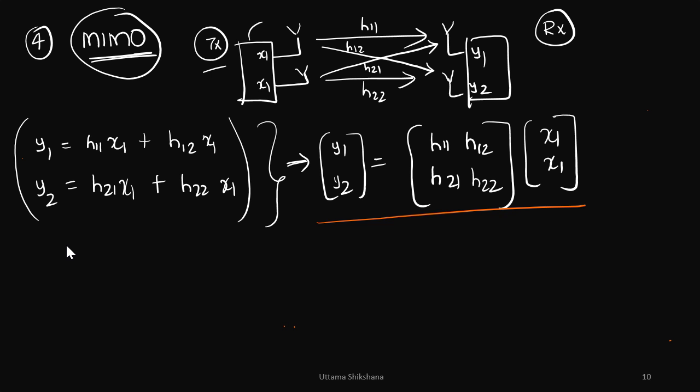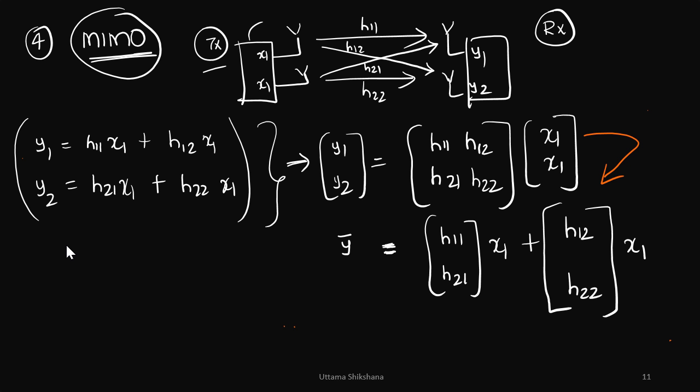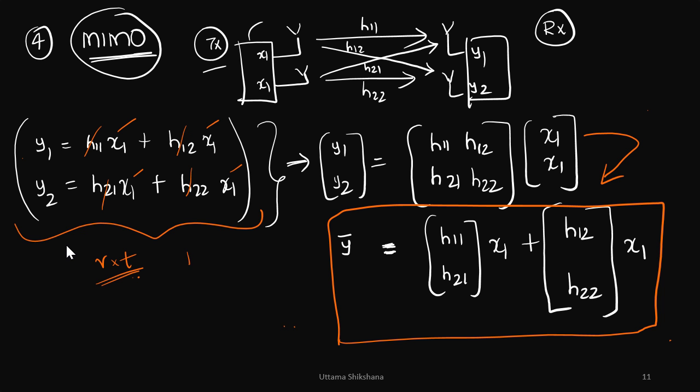Now if you see this equation, right, we have four links, one two three four, and on all these four links we have the multiple copies of the same intended signal. So here also we are achieving the diversity. And here in this case diversity is equal to number of receive antenna times transmit antenna. So total we have four here. Now what if I want to transmit x2 from antenna two of transmitter? Will I be able to recover both x1 and x2 independently at the receiver?